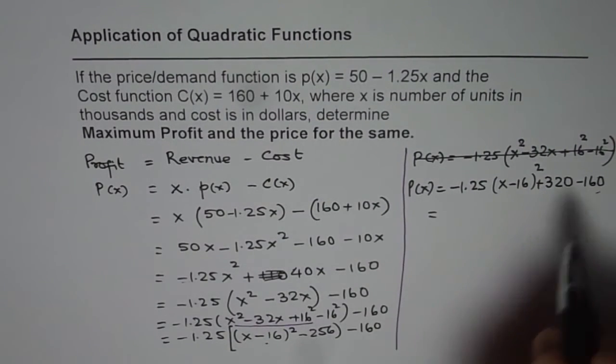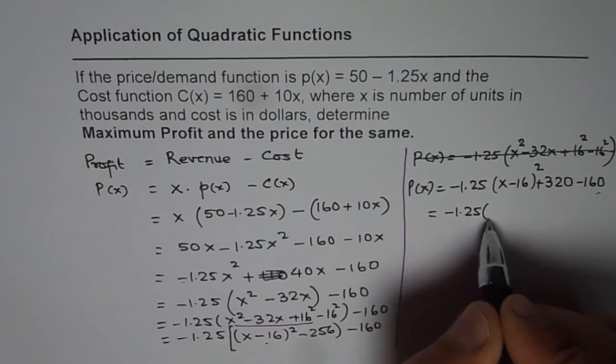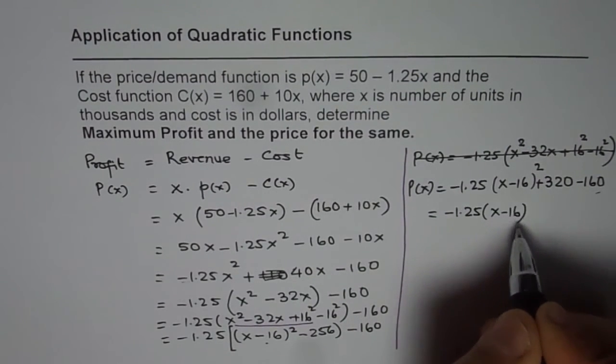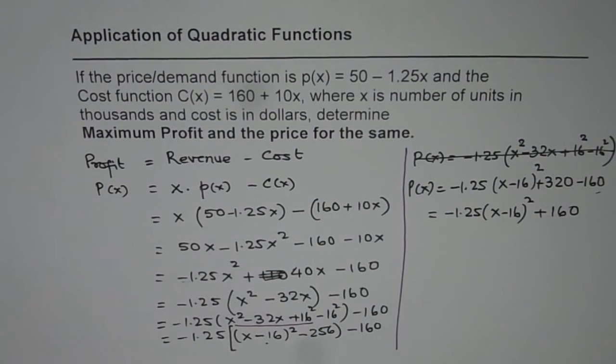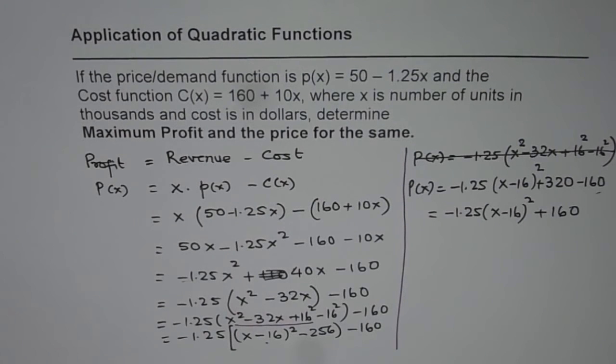Combine these two terms. We get minus 1.25 x minus 16 whole squared plus 160. So that is the profit function in vertex form.